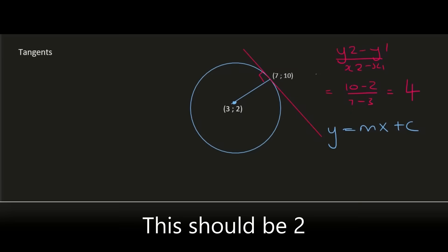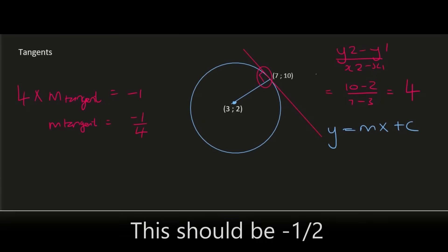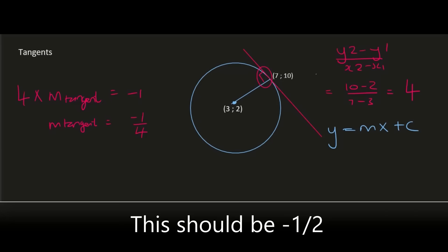Now we know that when two lines are 90 degrees to each other, when you multiply their gradients you should get an answer of -1. So 4 times the gradient of the tangent should give us -1. Solving for m_tangent gives us -1/4. There we have the gradient of the tangent.